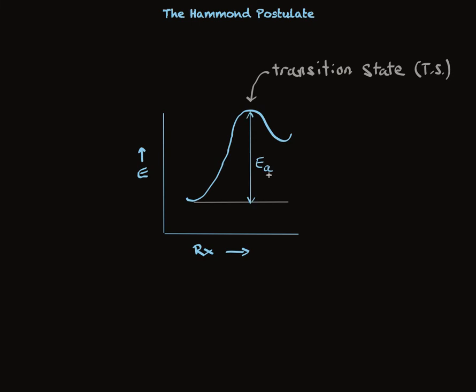Factors that stabilize the transition state will lower the activation energy because there will be a smaller hump. And Hammond said, well, we can't know what the transition state structure is because it has such a short lifetime.